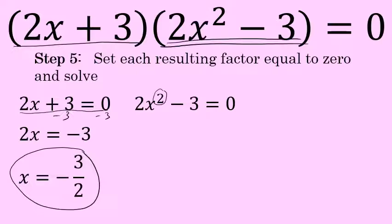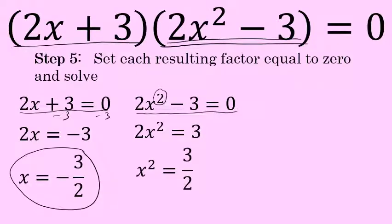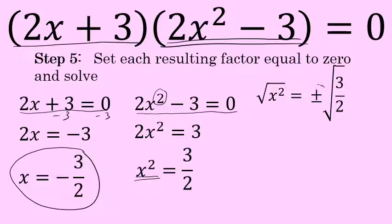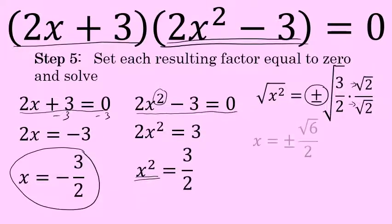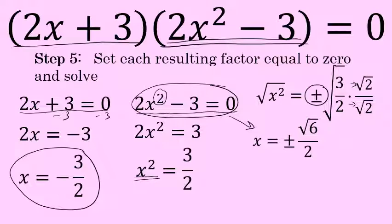The other two solutions are found by solving 2x squared minus 3 equals 0. Add 3 to both sides and divide by 2, leaving x squared equals 3 halves. Because this is x to the second power, take the square root of both sides — remembering the plus or minus — giving x equals plus or minus the square root of 3 halves. Rationalizing by multiplying top and bottom by the square root of 2, the square root of 3 over 2 is equivalent to the square root of 6 over 2. So x equals plus or minus the square root of 6 over 2.